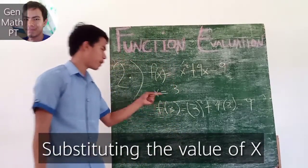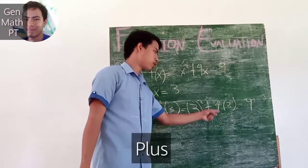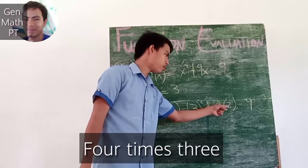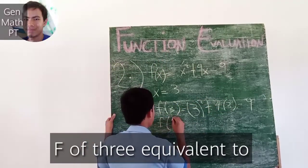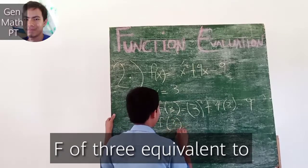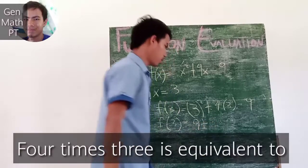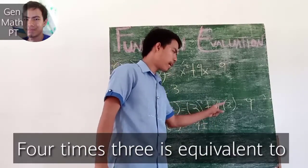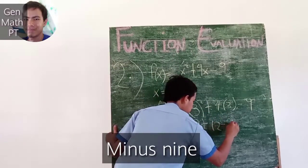Substituting the value of x, we have f of 3 equals 3 squared plus 4 times 3 minus 9. f of 3 equals 9, then plus 4 times 3 equals 12, minus 9.